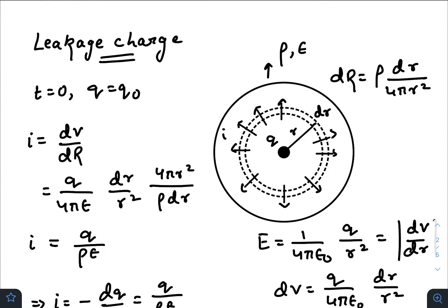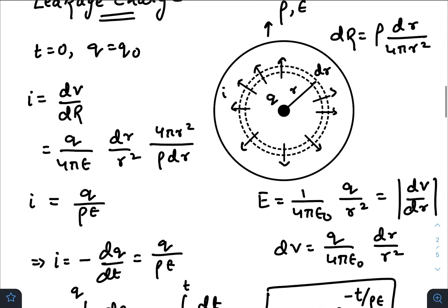For that, to find out the value of current, I have taken a region which is at radius r and of thickness dr. It is a thick spherical shell. Its resistance would look something like dR equals ρ dr divided by 4π r², that is the surface area.